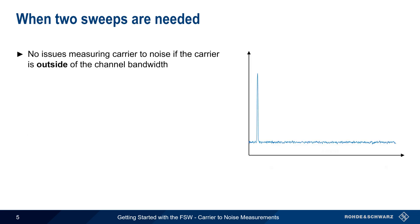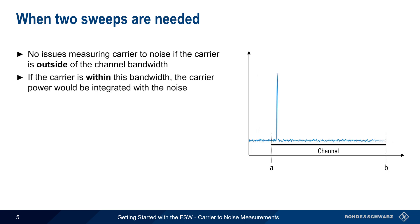If the carrier lies outside of the user-defined channel bandwidth, only a single sweep is needed to measure both the carrier and the noise. However, if the carrier were within the channel bandwidth, the carrier power would be included when integrating over the channel, and the result would be an incorrectly high noise level.